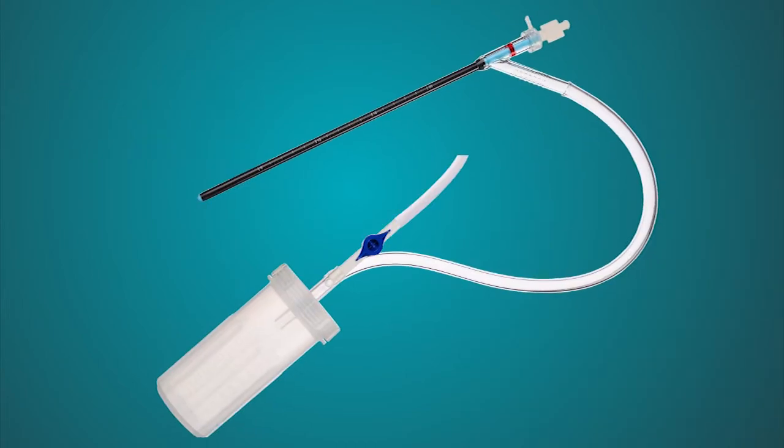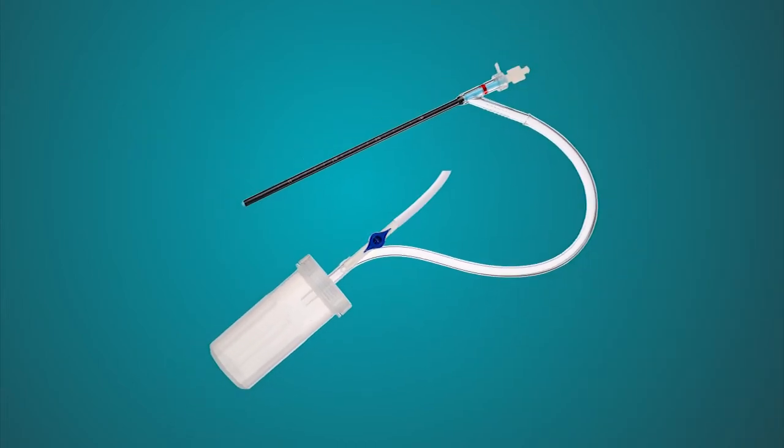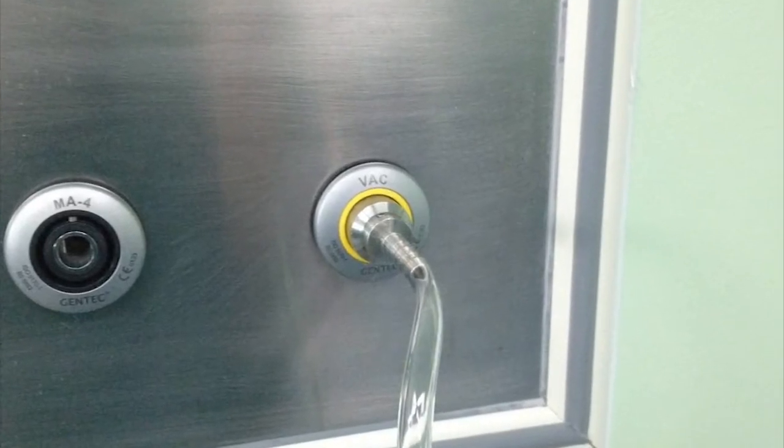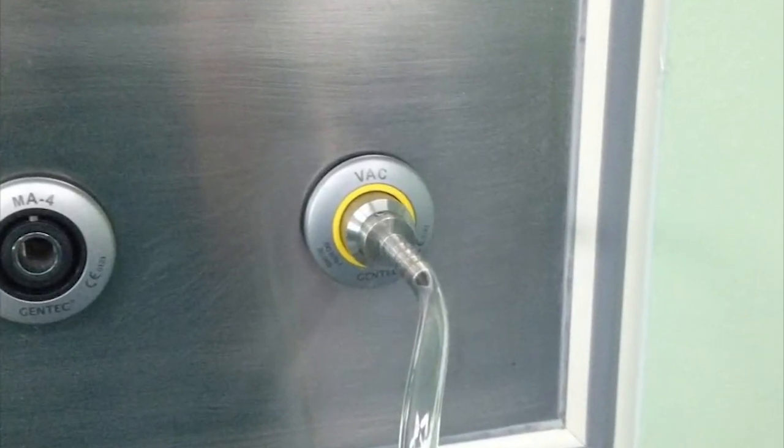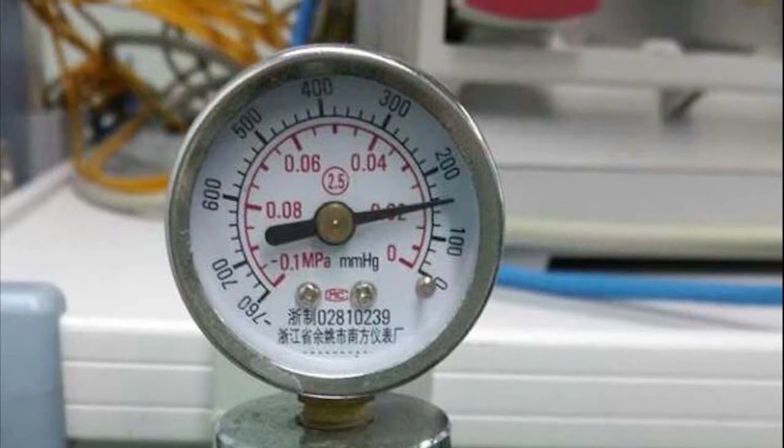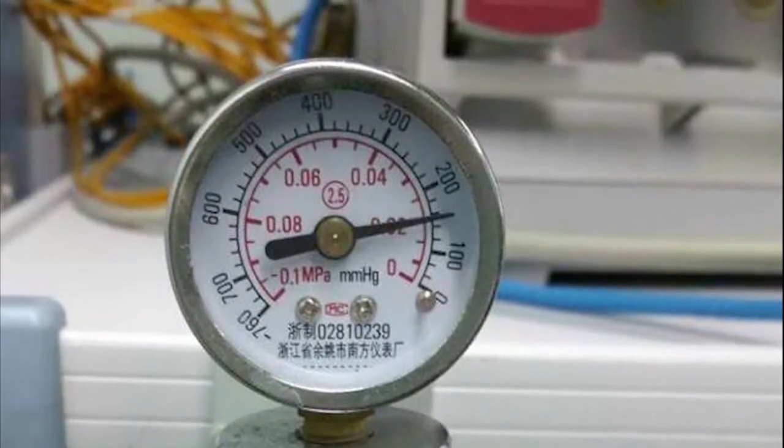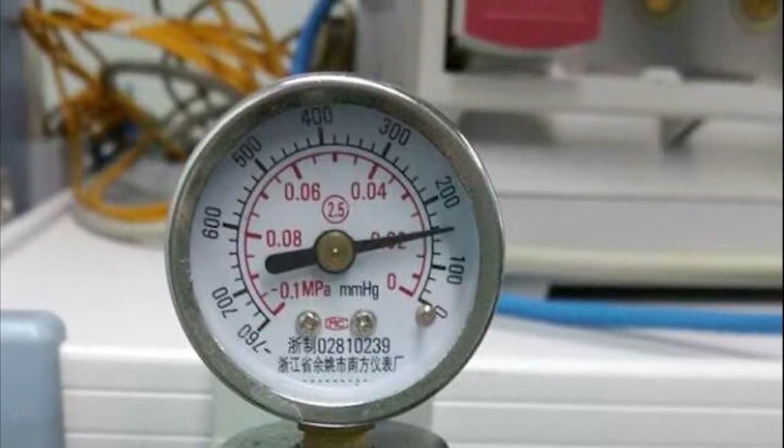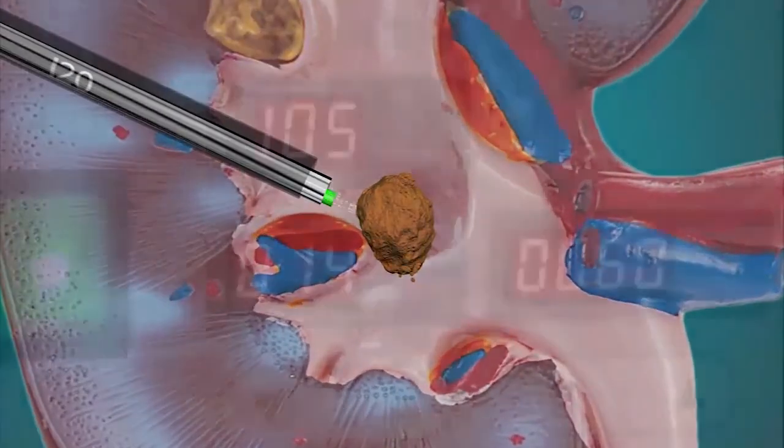Connect the oblique sluice of the access sheath to the stone collection bottle, then onto a negative pressure aspirator. Activate the suction at 150 to 200 millimeters mercury pressure. Insert the endoscope through the center aperture and turn on the pressurized irrigation at a flow of 50 to 100 cc per minute.